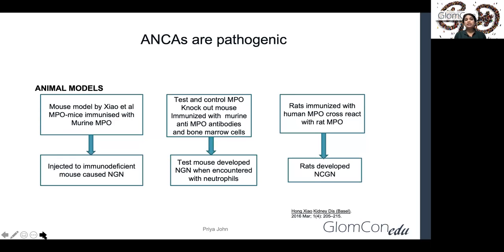The evidence regarding the pathogenicity of ANCA is mainly derived from animal models. The famous mouse model by Xiao et al. documented that MPO-knockout mice, when immunized with murine MPO and injected into immunodeficient mice, caused severe necrotizing glomerulonephritis. Another model showed that test MPO-knockout mice immunized with murine anti-MPO antibodies and bone marrow cells developed necrotizing glomerulonephritis when encountered with neutrophils. Additionally, rats immunized with human MPO cross-reacted with rat MPO and developed severe necrotizing glomerulonephritis.